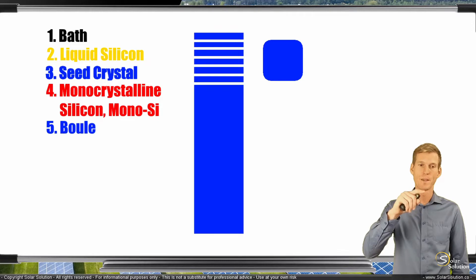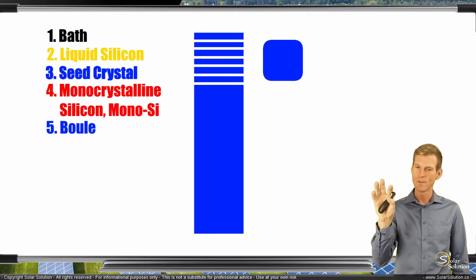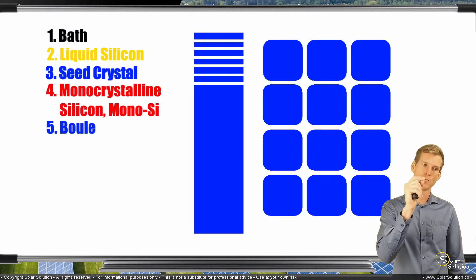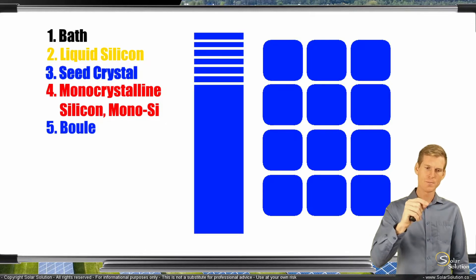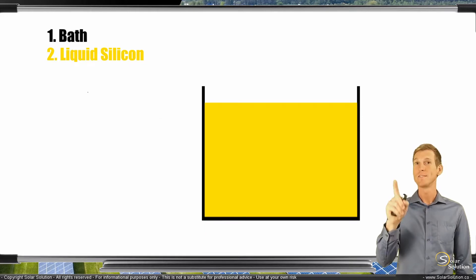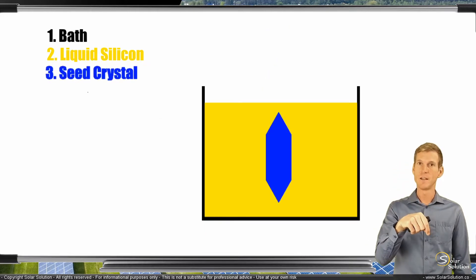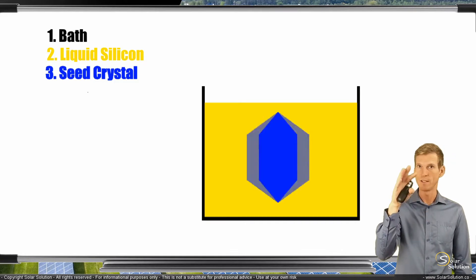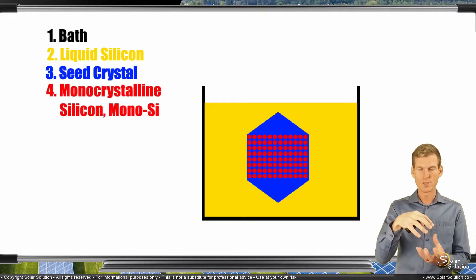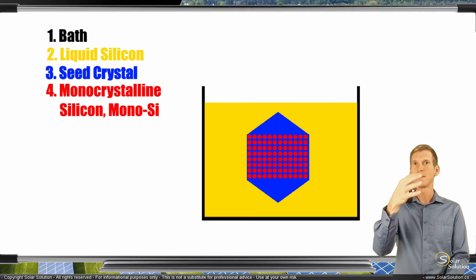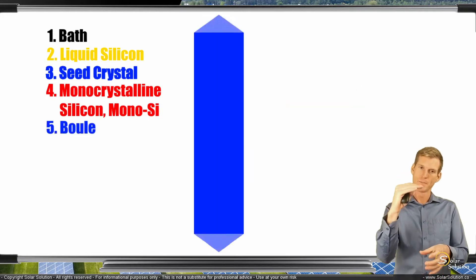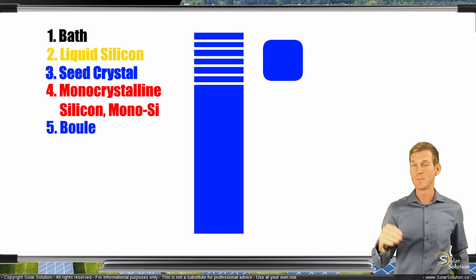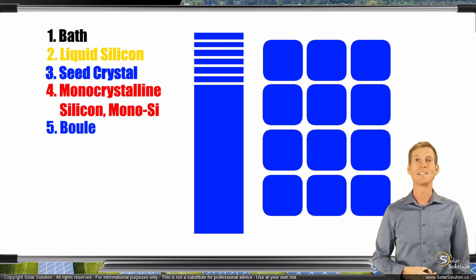We take these monocrystalline squares and place them in a panel, all nice side by side, and we are now constructing our photovoltaic module. So to recap: we started with silicon, heated it up, poured it into a bath, placed a seed crystal inside, the seed crystal slowly grew as the silicon cooled and hardened, the monocrystalline structure formed into a cylinder — the boule. We cut the top and bottom off, sliced it into very thin wafers, cut the edges off, and placed the solar cells into the panel — creating our monocrystalline silicon photovoltaic module.